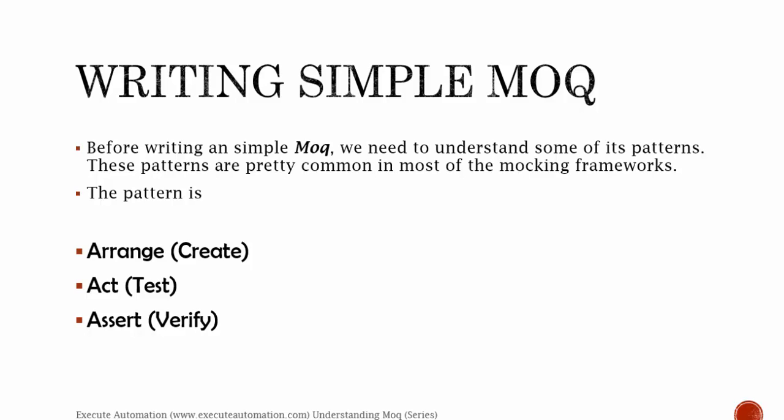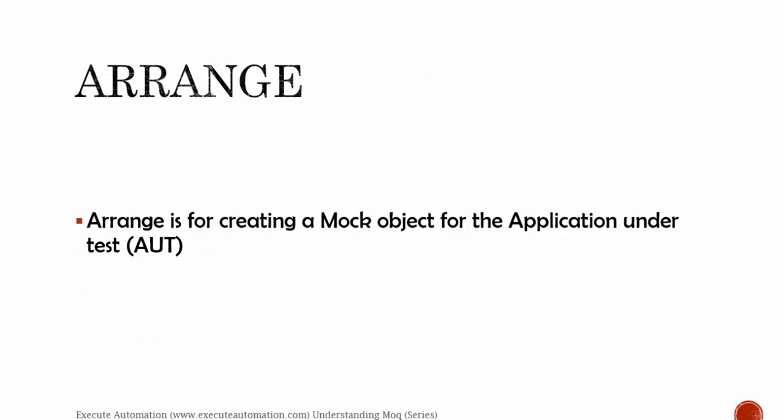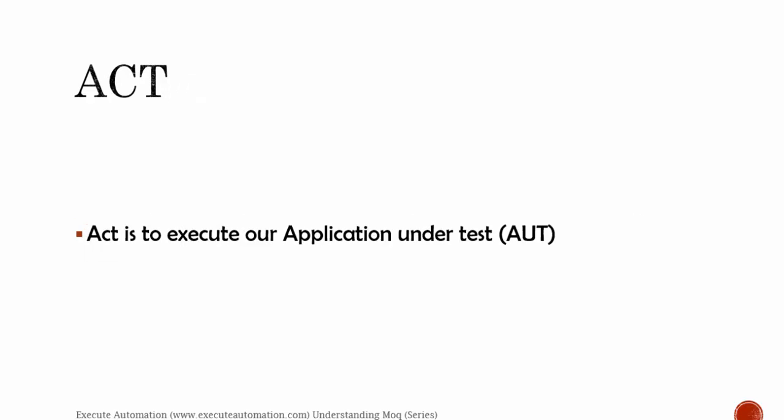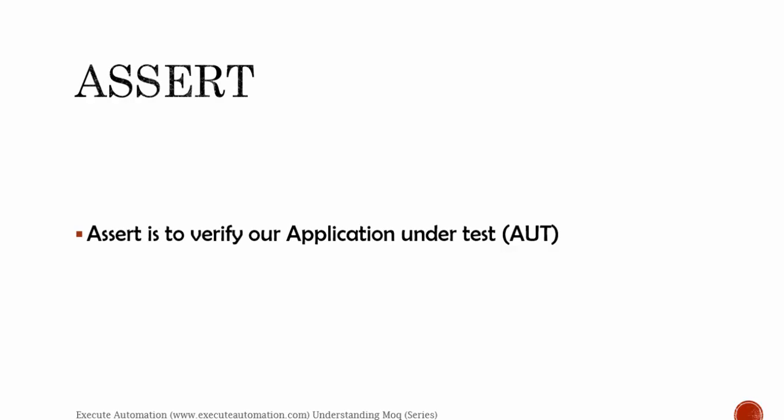So these are the most simple patterns to be followed while using mock. Arrange is for creating a mock object for the application under test — whichever application we are going to test, we need to first arrange a mock object for testing it. Then we need to Act on the application under test, which is nothing but execute the code. And then we Assert to verify if it works fine or not. This is a very simple pattern to be followed while writing mock.